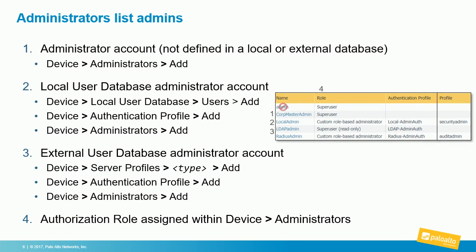Let's talk about how to add the simplest administrator accounts — what I call administrators list admins. Go to Device > Administrators, hit Add, and supply a username and password. This isn't ideal if every admin's username is defined in this list, as it can become painful to administer. Other options include local user database accounts or external user database accounts. I'll show you how to set up all of these, including RADIUS.